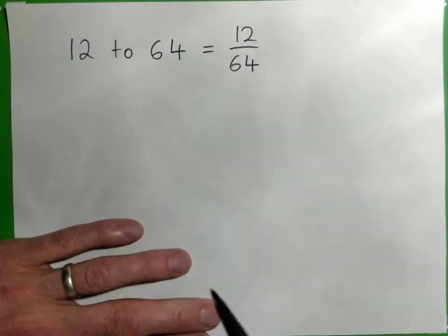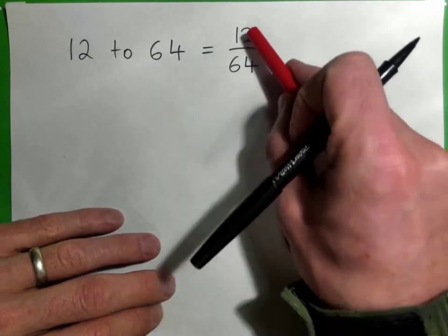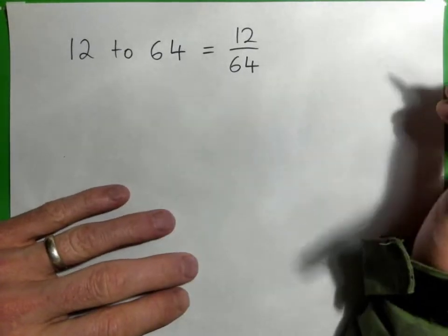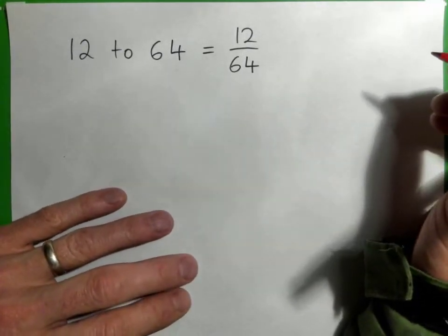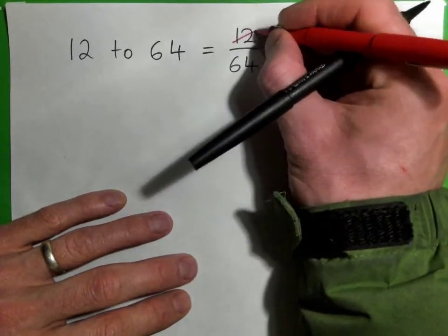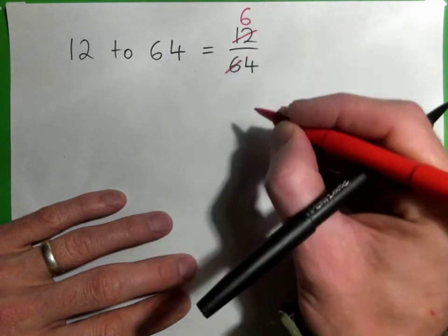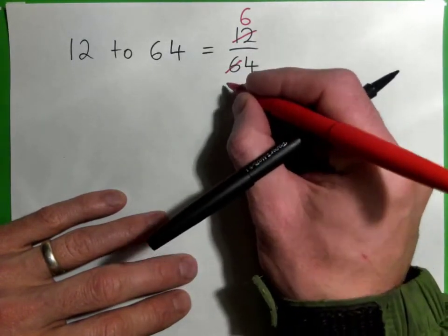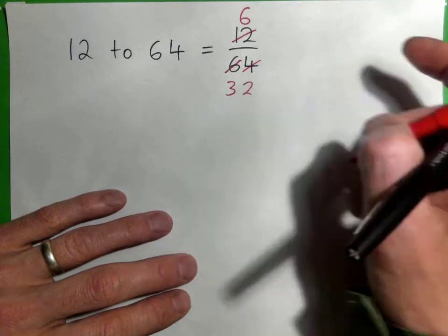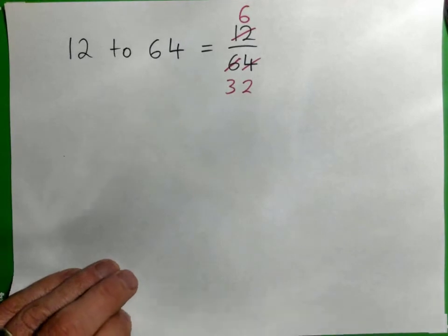Now we can put that in lowest terms — what number goes into the top and bottom? So take your time. Just 2 will help, because 2 into 12 goes 6 times. Now just do 2 into 6 — and 2 into 64 goes 32. So now we have 6 over 32, and we can simplify that again.